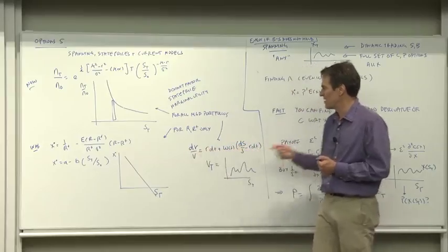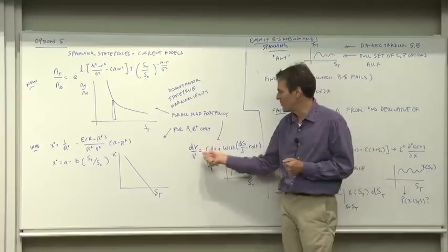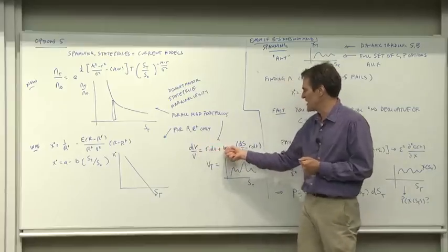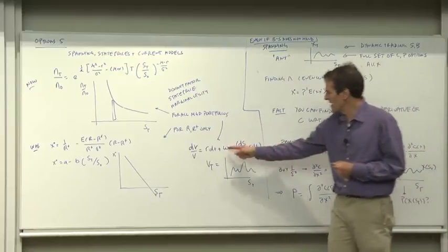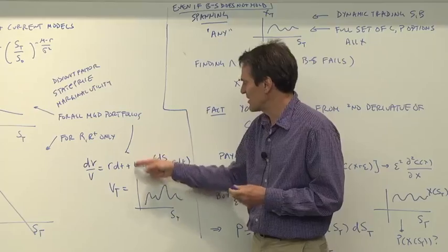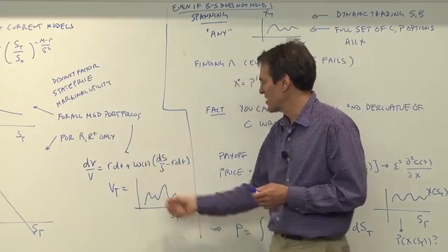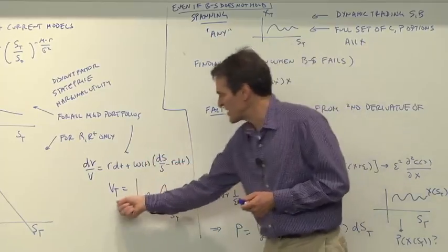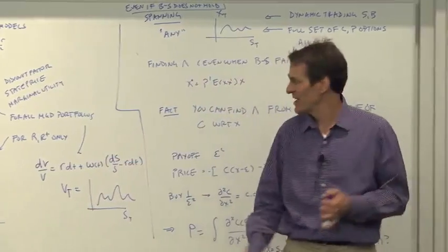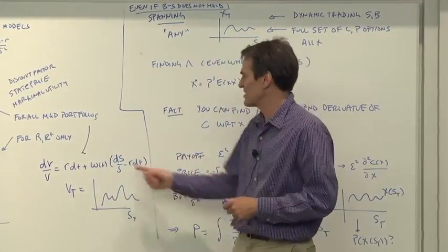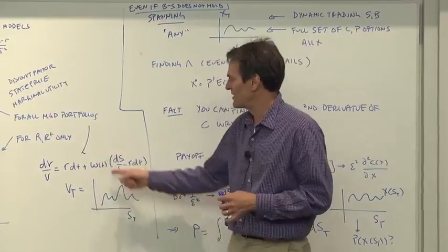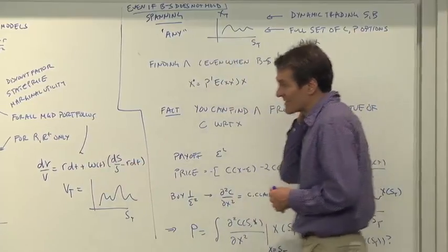So that V, the value process, goes up as RDT plus then the weight in stocks times what stocks do. By dynamically changing the value that you put in stocks, you can get all sorts of interesting terminal values of this payoff. This is how we generate interesting combinations of contingent claims by dynamically trading assets.